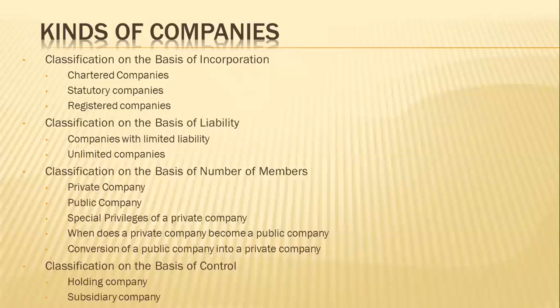The annual report on the working of each statutory company is required to be placed before Parliament or the state legislature, as the case may be. A statutory company, though owned by the government, has a separate legal entity — it cannot be regarded as a department of the government. The provisions of the Companies Act of 1956 apply to statutory companies except where those provisions are inconsistent with the provisions of the act creating them.